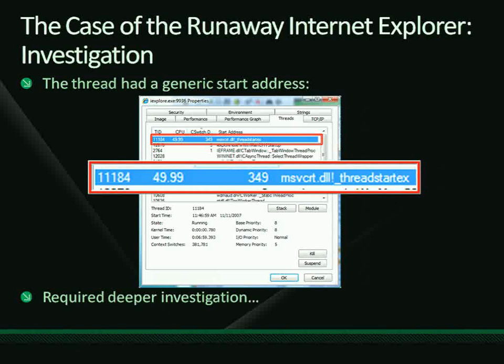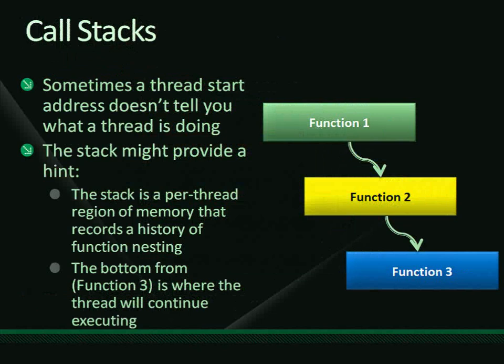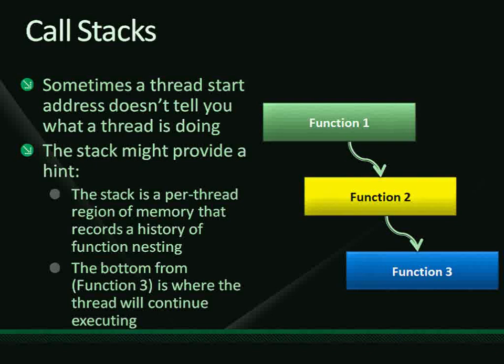A call stack is essentially a record of function invocations performed by a thread. The bottom of the stack is where it began its life. When one function calls a subroutine, that next function is pushed onto the stack. When it finishes, the system knows how to continue execution in the calling function because that return information is stored on the stack. The stack is a per-thread region of memory where functions pass arguments, store local parameters, and track how to return to their callers.